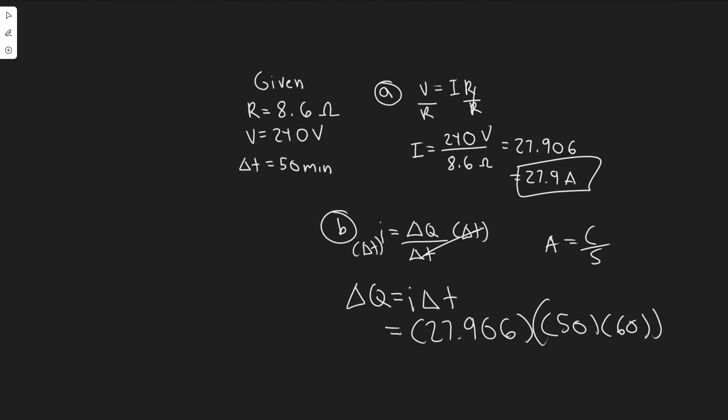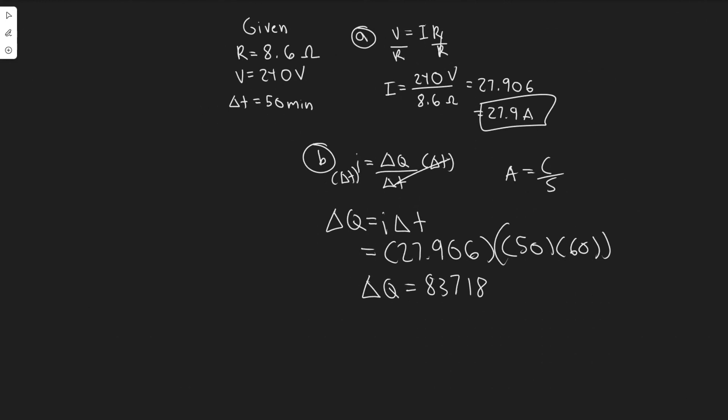And so you're going to get Delta Q equals 83,718. I'm just going to round to 84,000. So 84,000 coulombs. You can write it however you want—about 84,000 coulombs, or you could write it as 8.4 times 10 to the 4. So these are going to be your answers, and hopefully you found this useful.